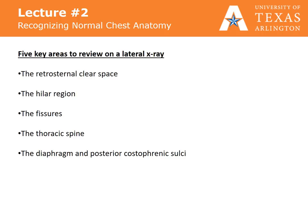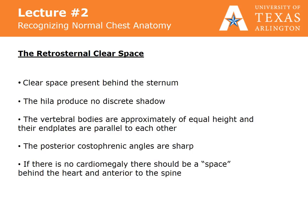Five key areas which need to be reviewed on a chest x-ray include the retrosternal clear space, the hilar region, the fissures, the thoracic spine, and the diaphragm and posterior costophrenic sulci. The retrosternal clear space is present behind the sternum. The hilar region produces no discrete shadow. The vertebral bodies are approximately of equal height and their end plates are parallel to each other. The posterior costophrenic angles are sharp. If there is no cardiomegaly, there should be a space behind the heart and anterior to the spine.